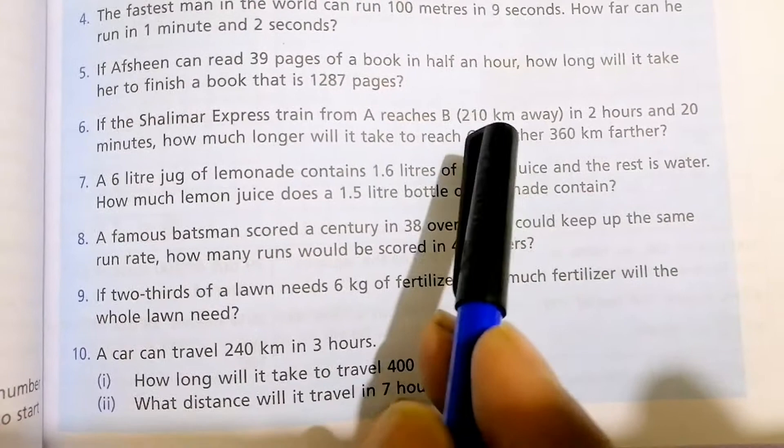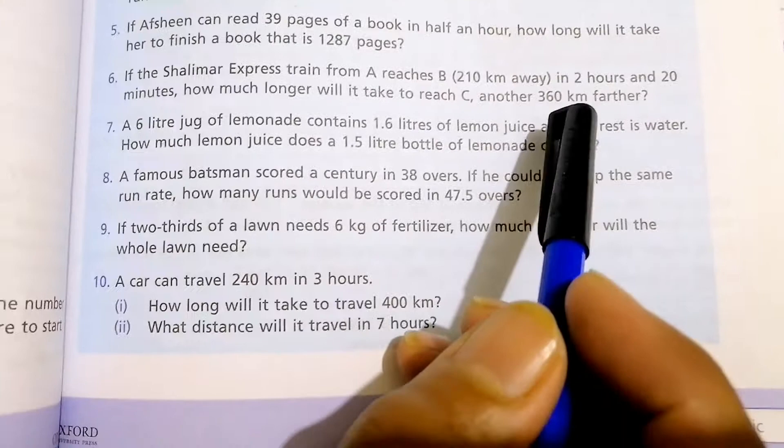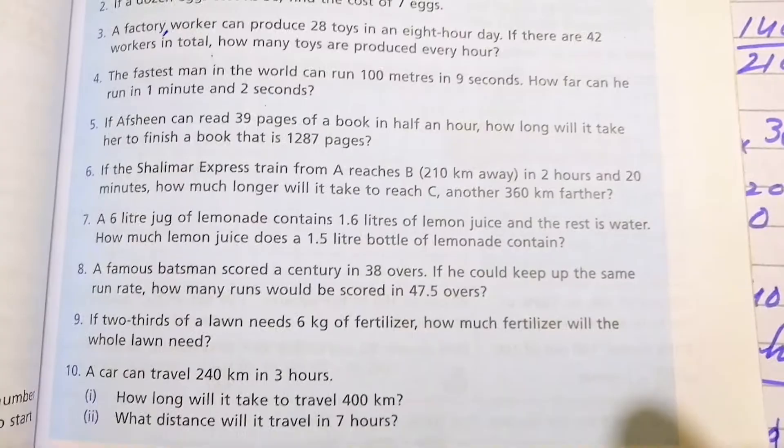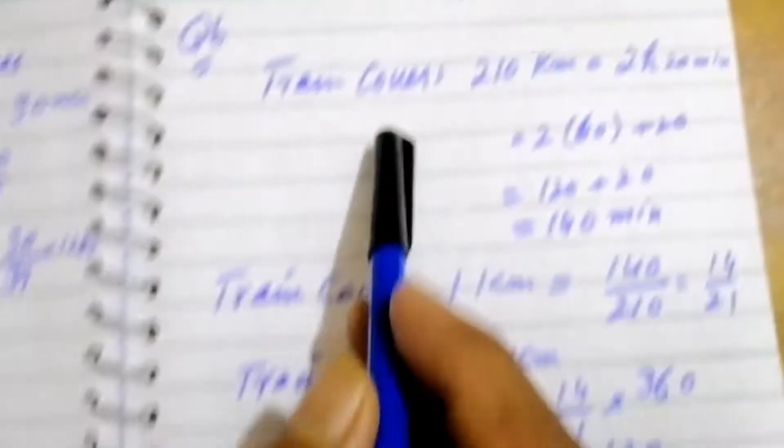Then, again the train will travel towards C station and it is away, 360 kilometers away, further away. We have to see. Question number 6 is, train covers 210 kilometers in 2 hours and 20 minutes.